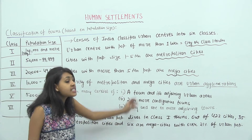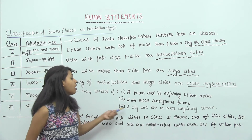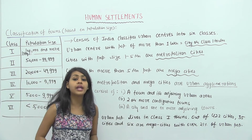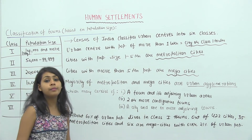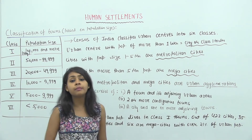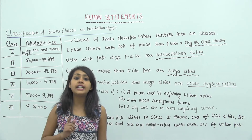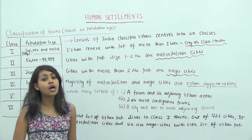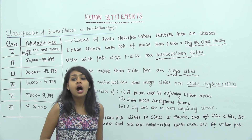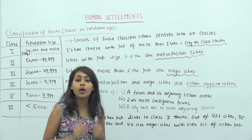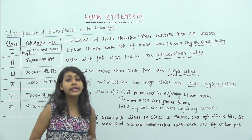This is important because in reality, a large number of the metropolitan and mega cities we have are nothing but urban agglomerations. These are not individual cities or towns by themselves, but urban agglomerations consisting of one or more cities, one or more towns — essentially more than one settlement grouped together.